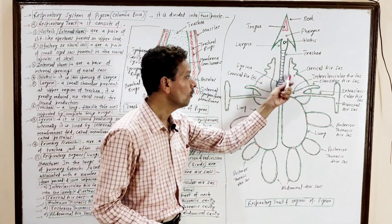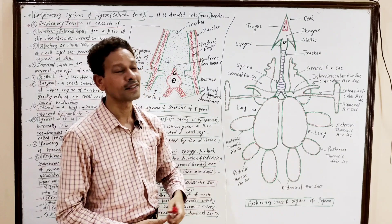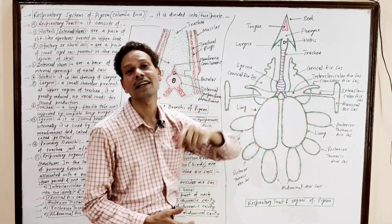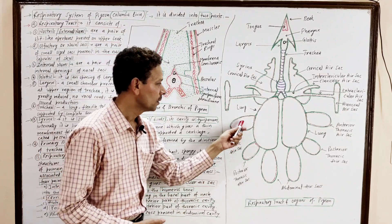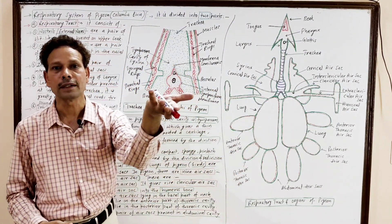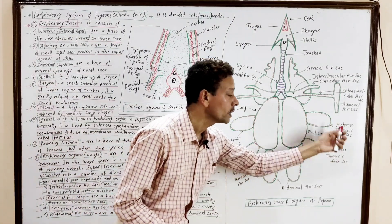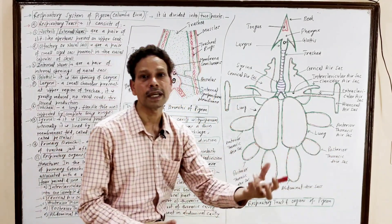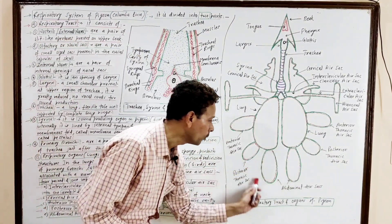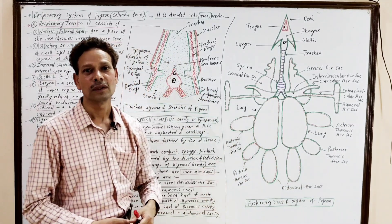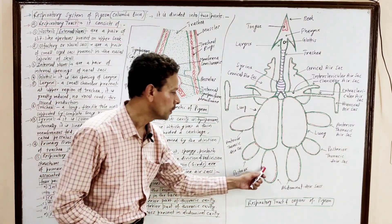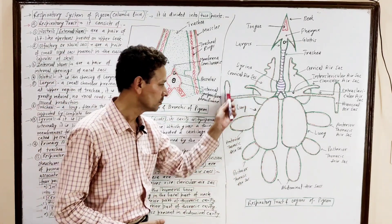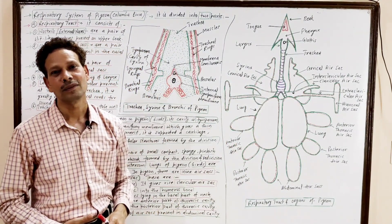Then there is a pair of cervical air sacs — these are large, irregular-shaped air sacs present in the neck region. In the anterior thoracic region, a pair of anterior thoracic air sacs are present. In the posterior thoracic region, a pair of posterior thoracic air sacs are present. And in the abdominal region, between the coils of the small intestine, a pair of abdominal air sacs are present. These additional air sacs act as cooling agents and temperature regulators.